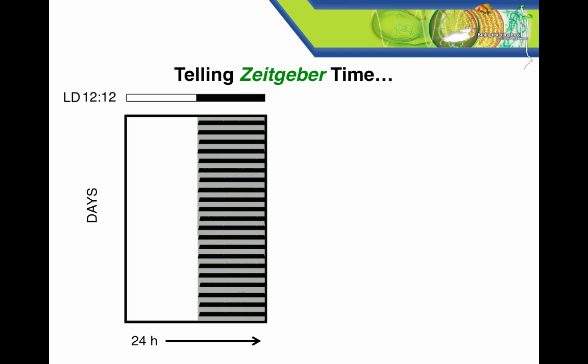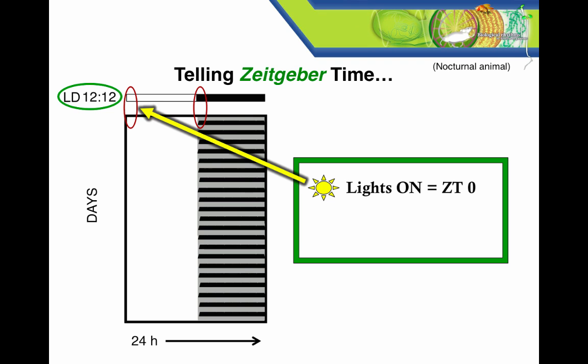So what does it mean to tell time using Zeitgeber time? Here's an example. Let's start by looking at activity under a light-dark cycle. So here we have a 12-12 light-dark schedule. Zeitgeber time is based only on Zeitgebers, in this case, on light transitions. Now again, we're looking at a nocturnal animal here, but it's important to remember that for Zeitgeber time, it doesn't matter when the organism prefers to be active, so whether it's diurnal or nocturnal. It's just based on the cues, in this case, on the lights. We call the transition when the lights come on ZT0, and the transition when the lights go off ZT12.